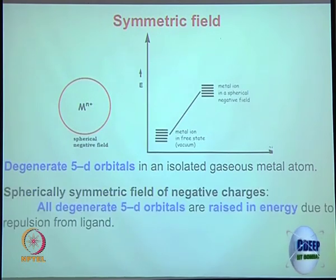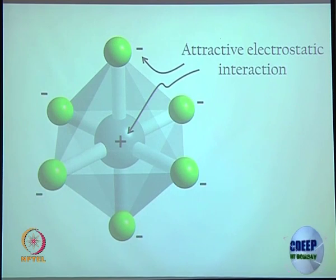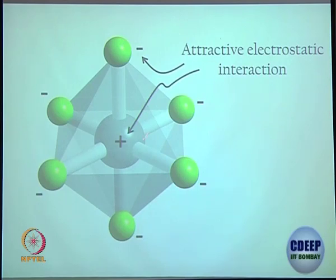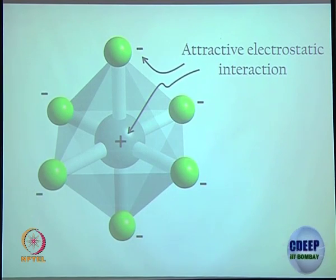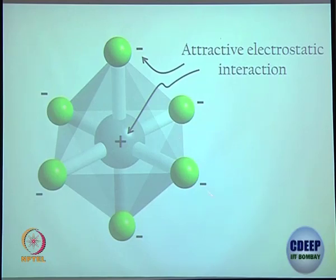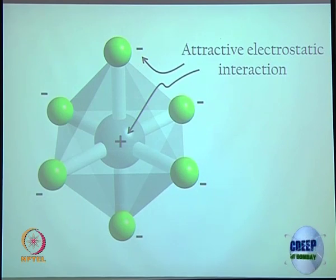In reality, ligands are not coming from every direction. It is specific — a ligand is here, here, here, here, here, and here — only a few directions. Let us say this is the z-axis, this is the y-axis, this is the x-axis. Ligands are going to approach the metal center only from specific directions — along these axes, not from other directions.